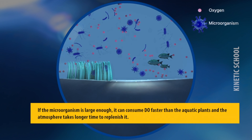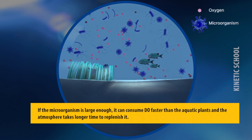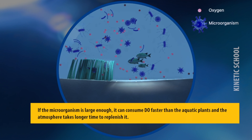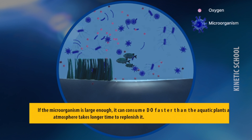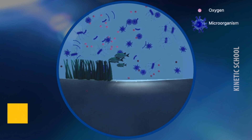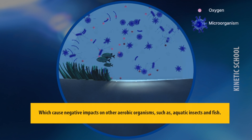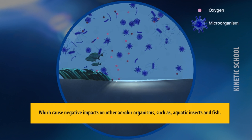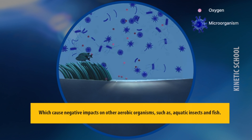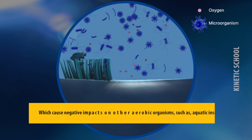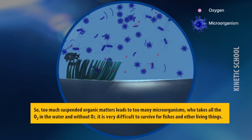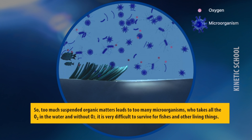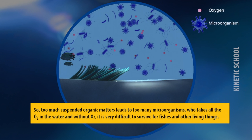If the microorganism population is large enough, it can consume dissolved oxygen faster than aquatic plants and the atmosphere can replenish it. This causes negative impacts on other aerobic organisms such as aquatic insects and fish. Too much suspended organic matter leads to too many microorganisms that consume all the oxygen in the water, making it very difficult for fish and other living things to survive.